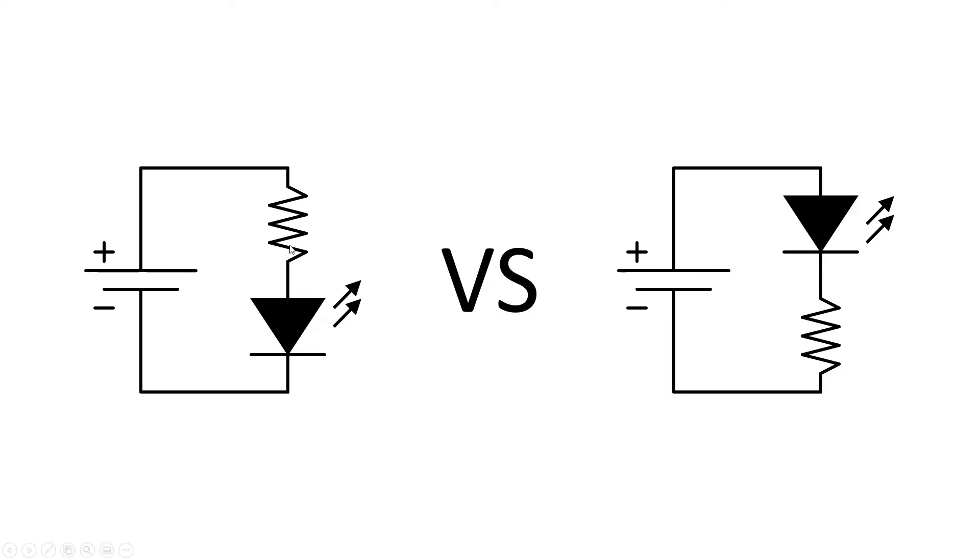If you have a circuit with a battery, a resistor, and an LED, does the resistor need to come before the LED in order to drop the voltage or resist the current, or can you also put the resistor after the LED? It turns out that it works both ways, and this video will explain why.